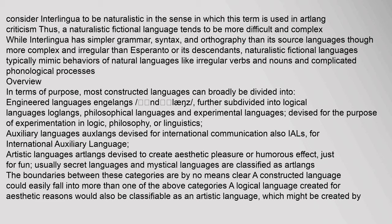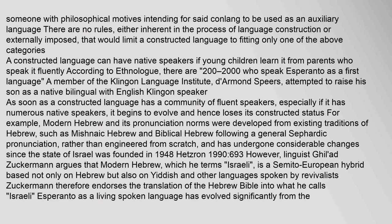The boundaries between these categories are by no means clear; a constructed language could easily fall into more than one category. There are no rules, either inherent in language construction or externally imposed, that would limit a constructed language to fitting only one category. A constructed language can have native speakers if young children learn it from parents who speak it fluently. According to Ethnologue, there are about 2,000 who speak Esperanto as a first language.